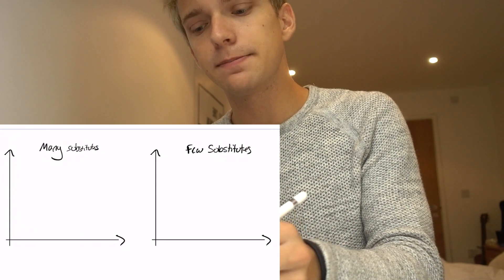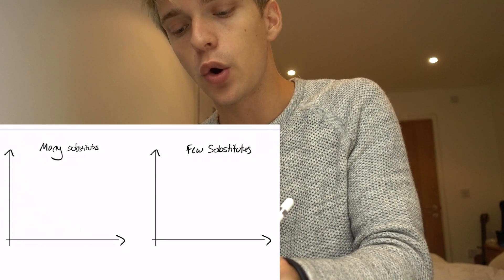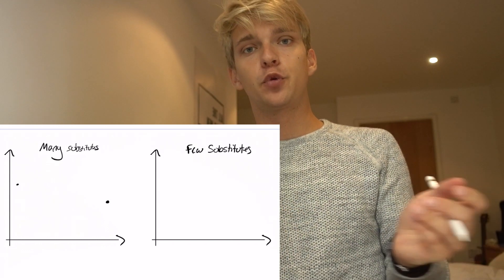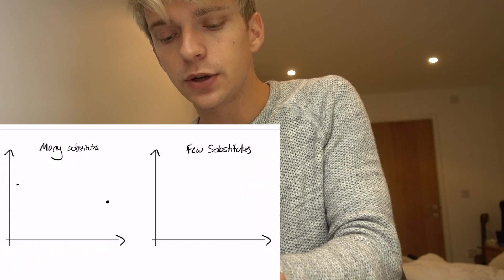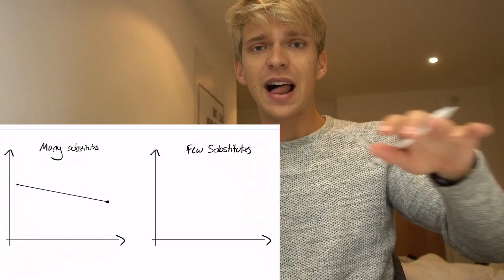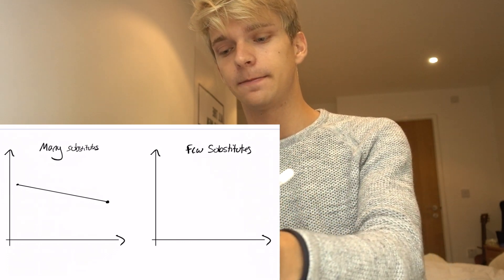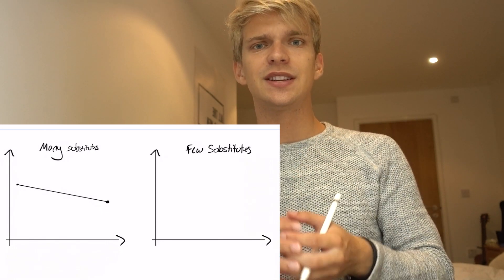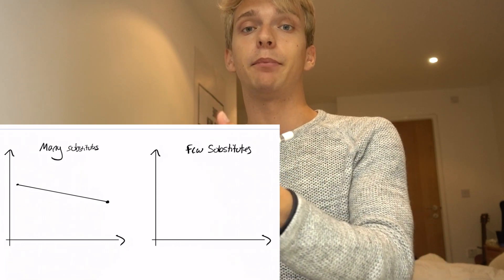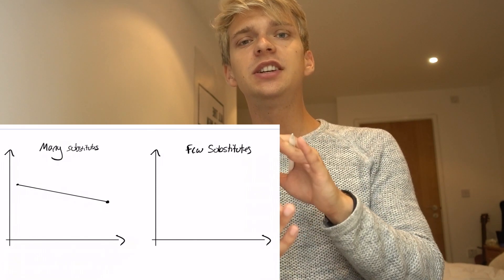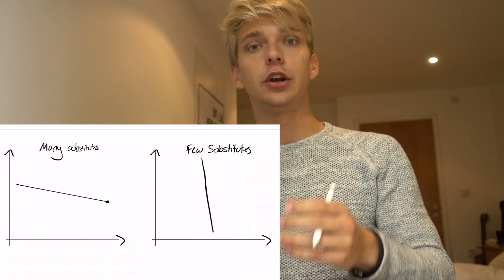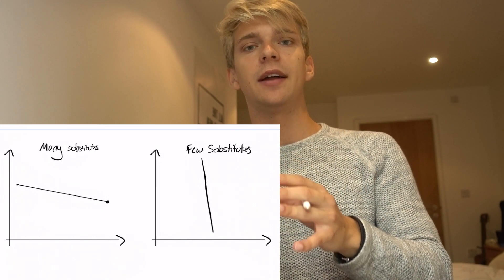So what would happen to the quantity demanded of Coca-Cola? Well, it would decrease. On a graph, if a good has many substitutes, a low price yields quite high quantity demanded, whereas when the price increases, we might drastically drop that quantity demanded. So a good with many substitutes will have a demand curve that's quite flat, or as we would call it, elastic. On the other hand, if a good has few substitutes and the price increases, consumers don't have the option of switching — so the quantity demanded would stay almost the same, giving us a much more inelastic demand curve.